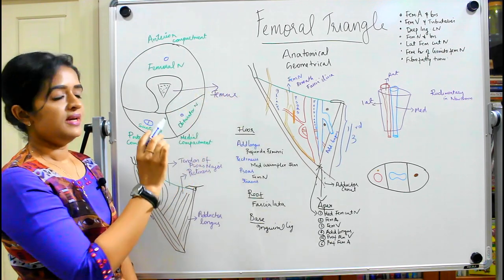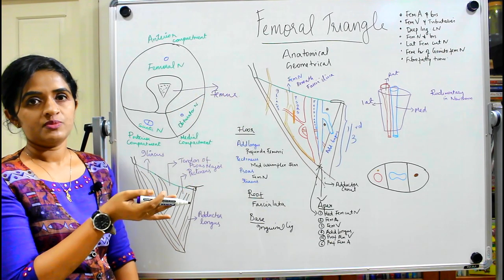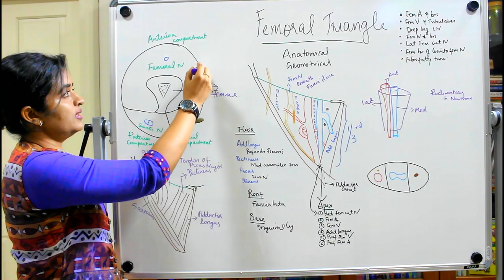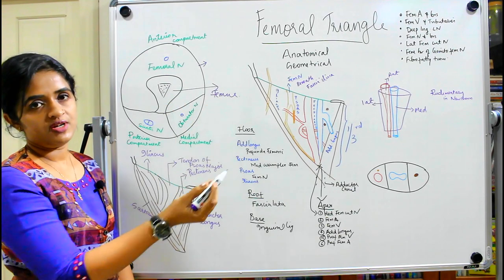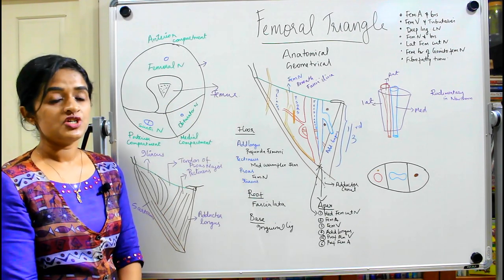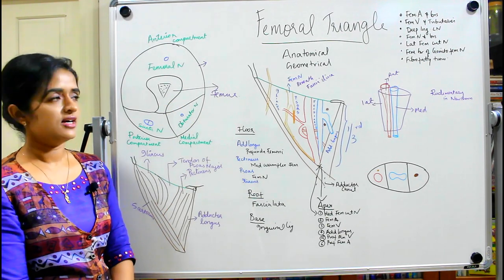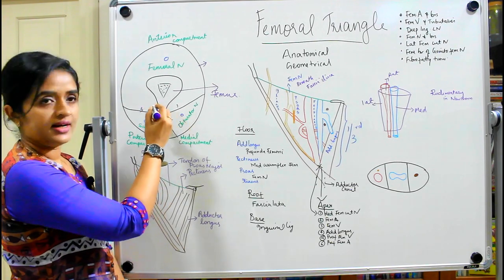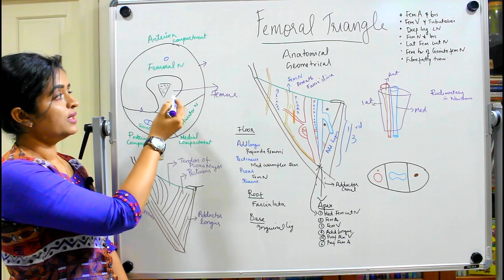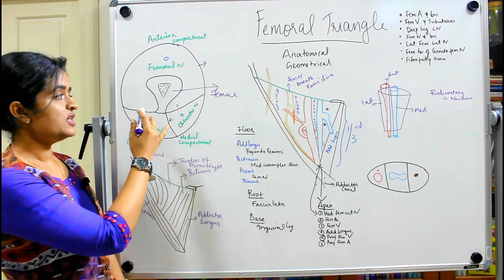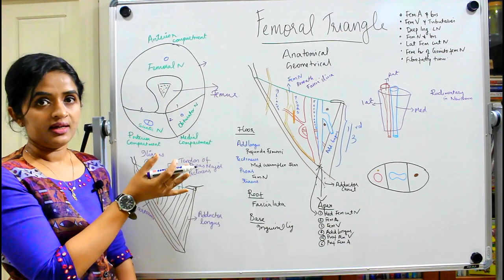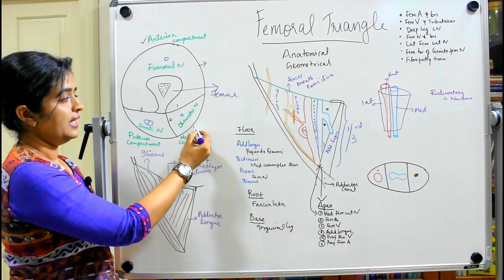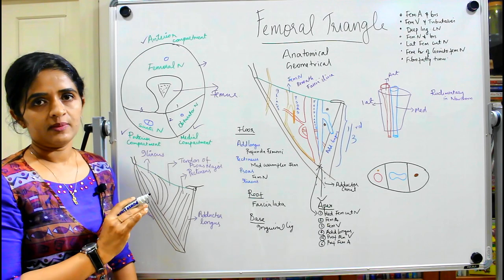There are mainly three intermuscular septa which are connected to the femur and the outer deep fascia, known as fascia lata. These three intermuscular septa connect the femur with the deep fascia, dividing the thigh into three compartments: the anterior compartment, the medial compartment, and the posterior compartment.